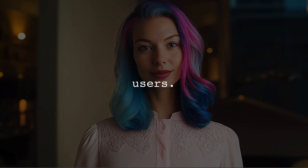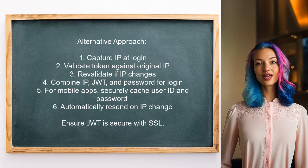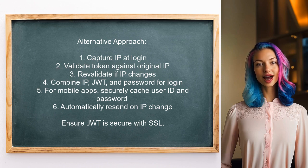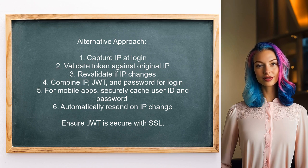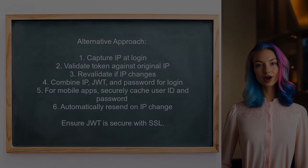An alternative approach suggests using JWT with IP address validation. When a user logs in, capture their IP address for the session. Each time they make a request, validate that the token is being used from the original IP. If a different IP is detected, require revalidation and issue a new token. This method combines the IP address, JWT, and password for secure login. For mobile apps, securely cache the user ID and password to automatically resend them if the IP changes, ensuring the JWT remains secure when using SSL.